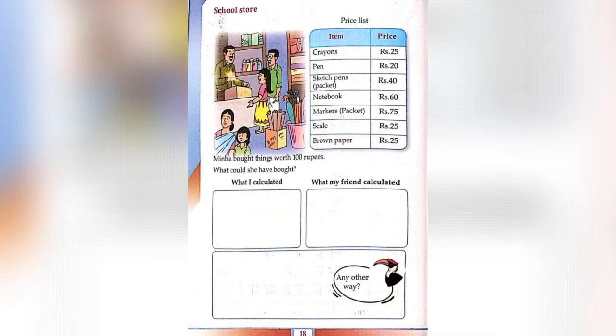Next, let's discuss about the school store. Mina bought things worth 100 rupees. What could she have bought? Let's go through the price list: Crayons — rupees 25, Pen — rupees 20, Sketch pens — rupees 40, Notebook — rupees 60, Markers — rupees 75, Scale — rupees 25, Brown paper — rupees 25.